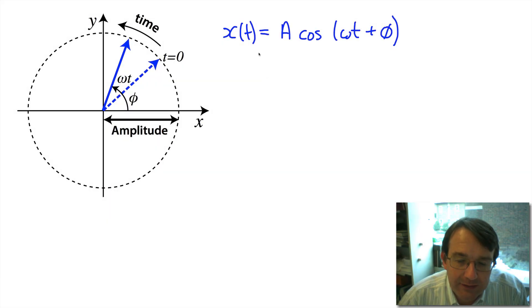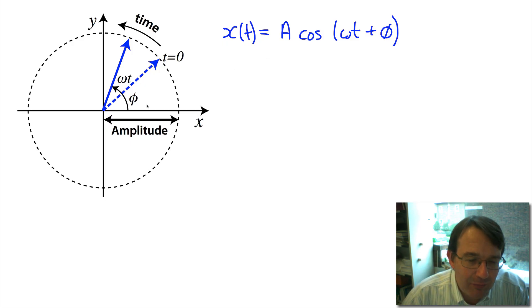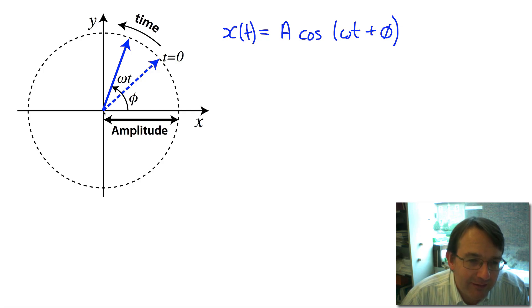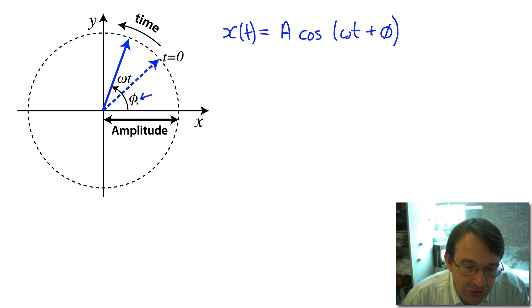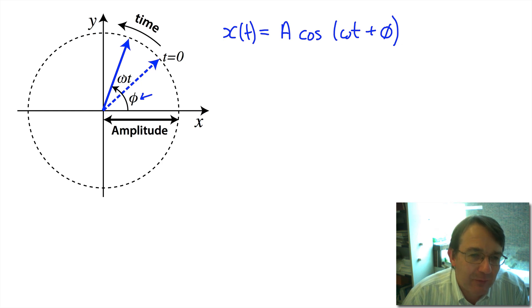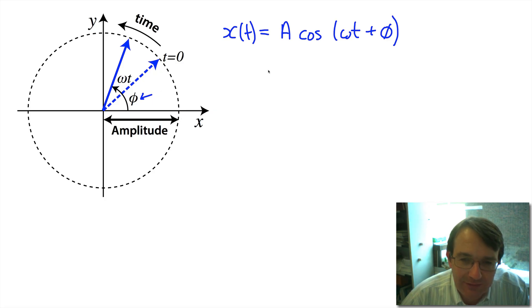Here we have the expression for the displacement of the oscillator as a function of time, and we can also see it represented as a phasor — this blue line that rotates. It starts at an angle phi to the positive x-axis, which gives us the initial phase. Omega t is then added as time goes by, so this line rotates in a circle, and the radius of the circle is just the amplitude a.